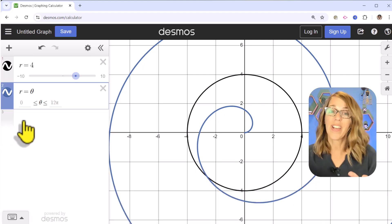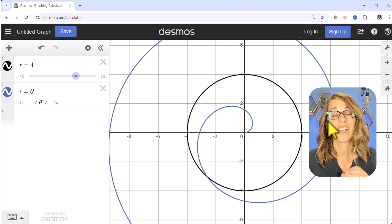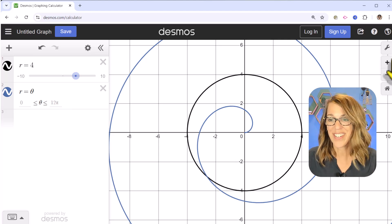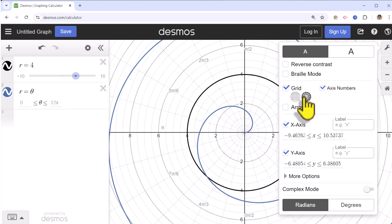But we've done all of this in our rectangular grid, but I would really like the polar coordinate grid instead. To do that, we're just going to go over here to the wrench. So I'm going to click on the wrench, and I want under grid, I want that to be polar.